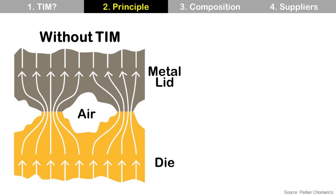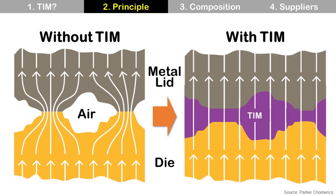Let's compare without TIM and with TIM and find out what the difference is. Look at the left picture — you can see empty space between the die and the metal lid filled with air. In this case, heat generated from the die is conducted to the metal lid only through a limited contact area, so the heat conduction path is not enough. But look at the right picture — you can see that the empty space is filled with TIM. Then heat is conducted through TIM with much more paths.